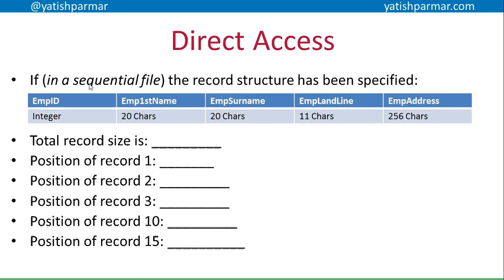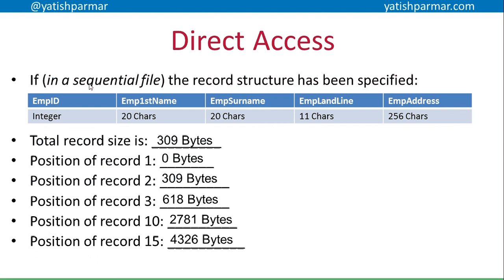One way to get past that is to use direct access with a specified record structure. For example, if the employee ID is an integer taking two bytes, ASCII text for 20 characters is 20 bytes, plus 20 bytes for the surname, plus 11 bytes for the landline, plus 256 bytes — adding them all together, one record is going to take 309 bytes.